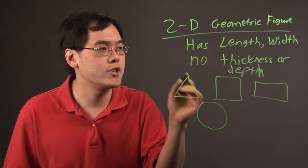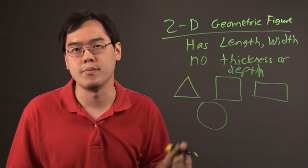But basically, any object that has just two dimensions but has no thickness or depth is a two-dimensional geometric figure.